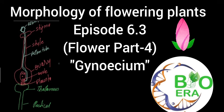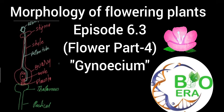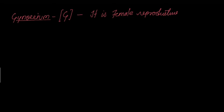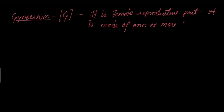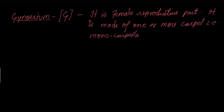Good. The pistil represents the reproductive part of the flower. It is made of one or more carpels. If there is one carpel, it is called monocarpillary; if there are more, it is called multicarpillary.